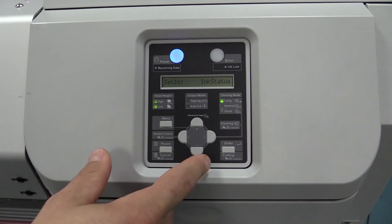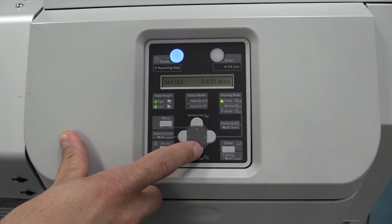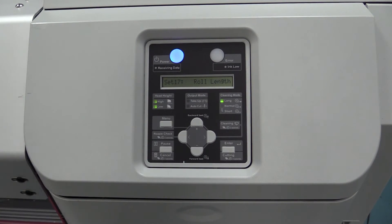Setting 16 is ink status, which is actually turned off at the moment on the printer, so we can skip that. Setting 17 is roll length, which gives you the option to program in your roll length so you can get an idea of the counter, what's left on the roll itself.